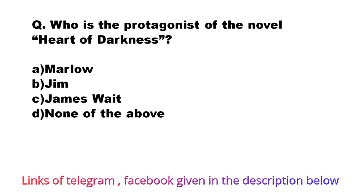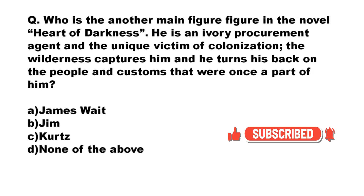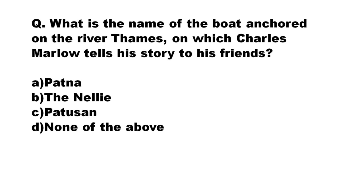Our next question: who is the protagonist of the novel Heart of Darkness? The options are Marlow, Jim, Kurtz, James Wait, none of the above. The correct answer is option A: Marlow. Our next question: who is another main figure in Heart of Darkness — an ivory procurement agent and the unique victim of colonization? The wilderness captures him and he turns his back on the people and customs that were once part of him. The correct answer is Kurtz. Kurtz is another important figure, and at the end he dies.